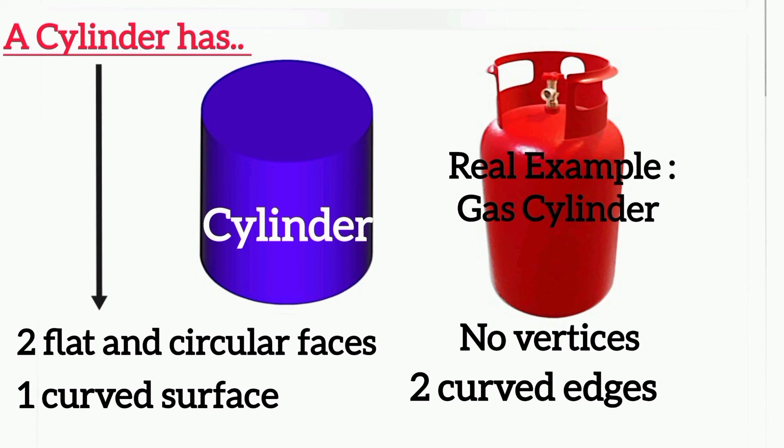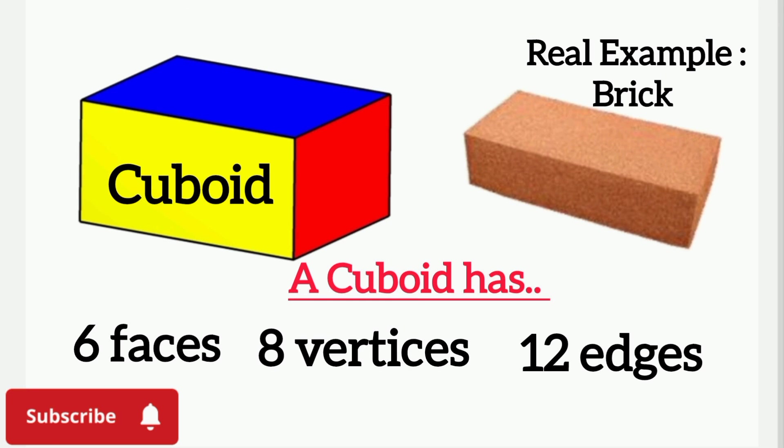Cuboid: a cuboid has six faces, eight vertices, and 12 edges. A real example of a cuboid is a brick.